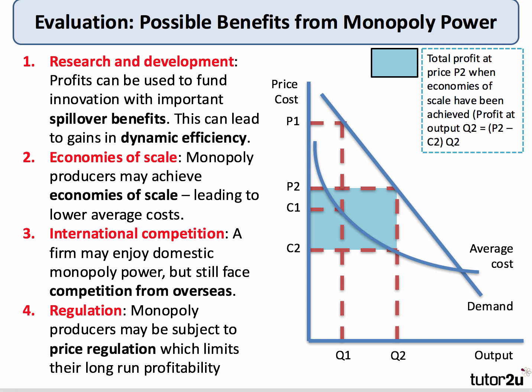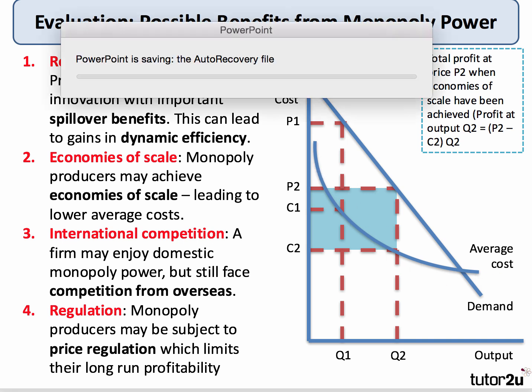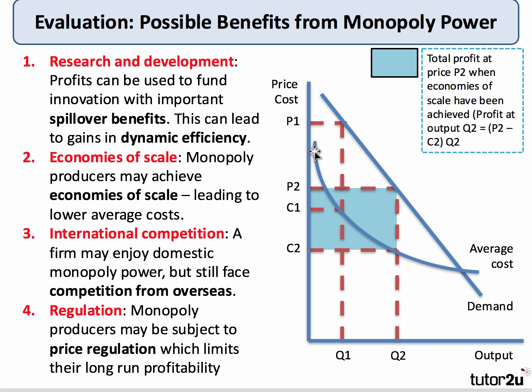Now, what about the benefits from monopoly? This is really going to help your evaluation skills. On the right hand side I've used a simple unit cost curve, assuming average costs are falling due to economies of scale, with a demand curve included. The monopoly could charge a high price P1 at output Q1, but if they have scale economies and big unit cost reductions in the long run, they could charge a lower price P2, sell extra output Q2, and still make profit. There's therefore an incentive for monopolies to achieve economies of scale, and the consumer can benefit from a lower price.